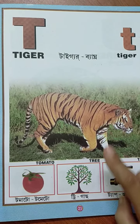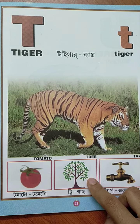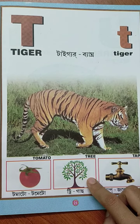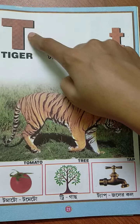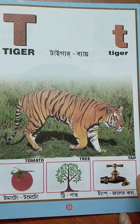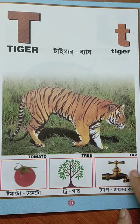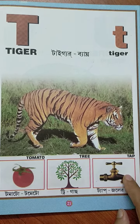T for tree. Tree mane holo gach. T for tap. Tap mane holo jol er kal.